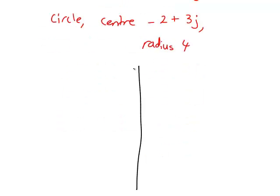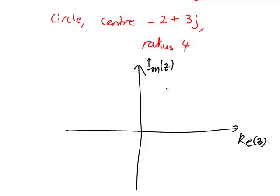Let's sketch this. The real part is on the x-axis, the imaginary part on the y-axis. -2 is the real part, so that's at -2 on the x-axis. +3j means positive 3 on the y-axis.